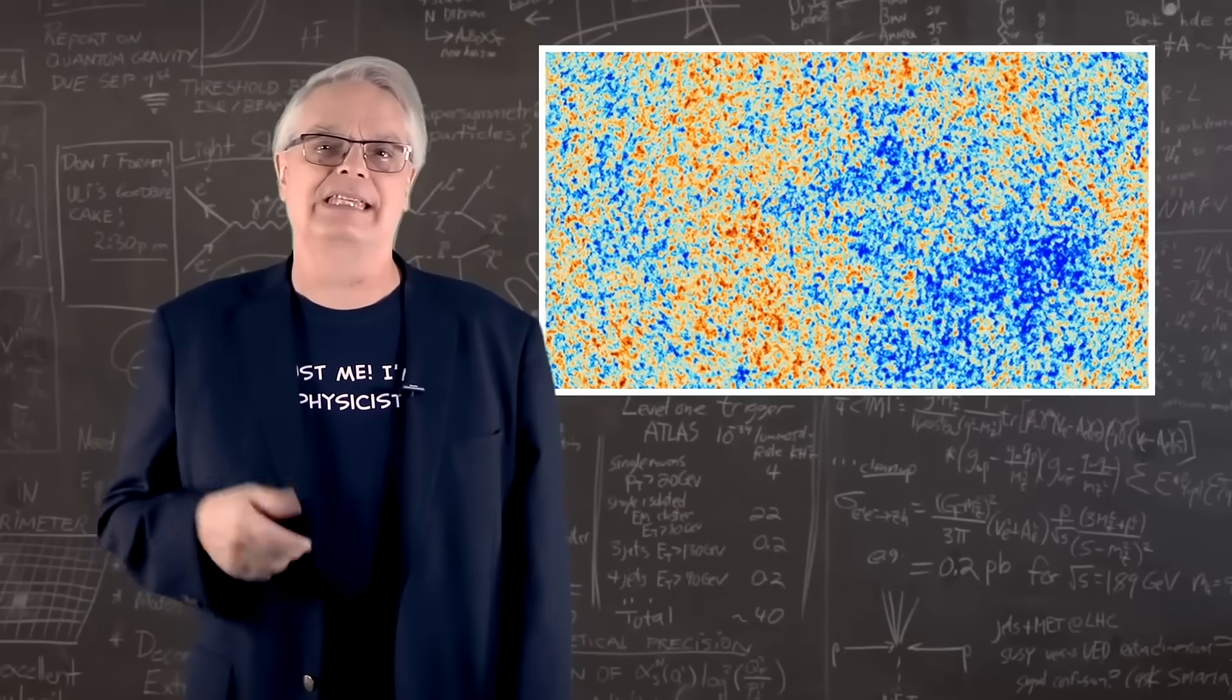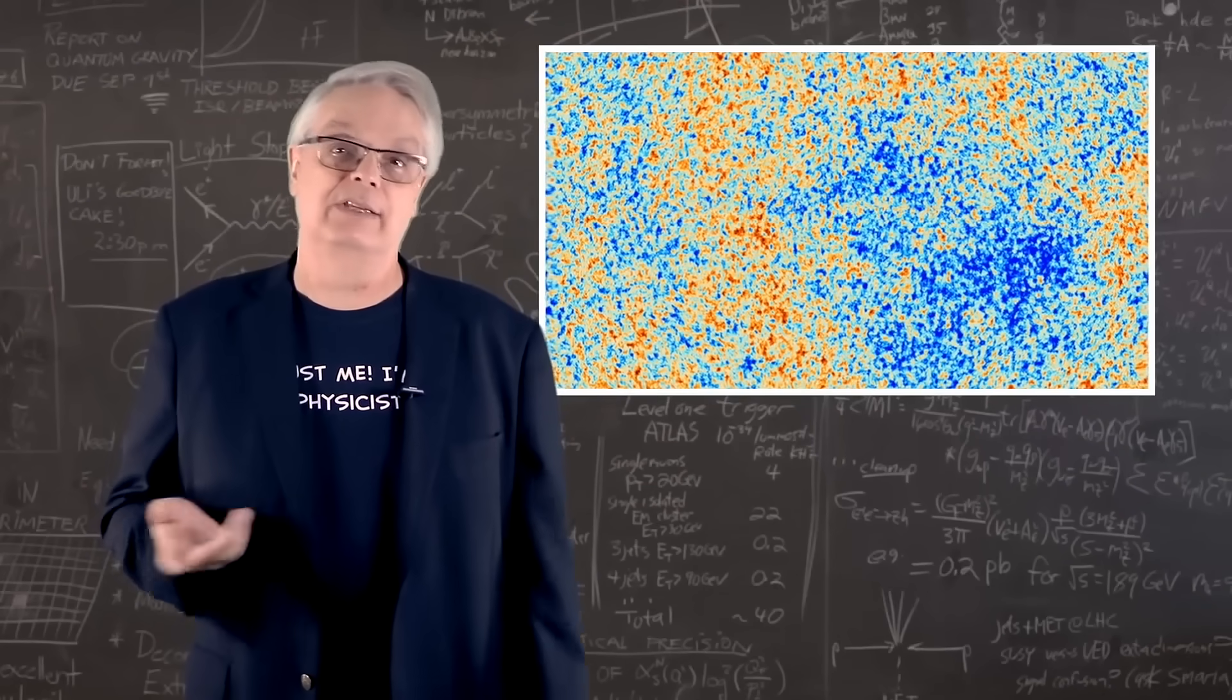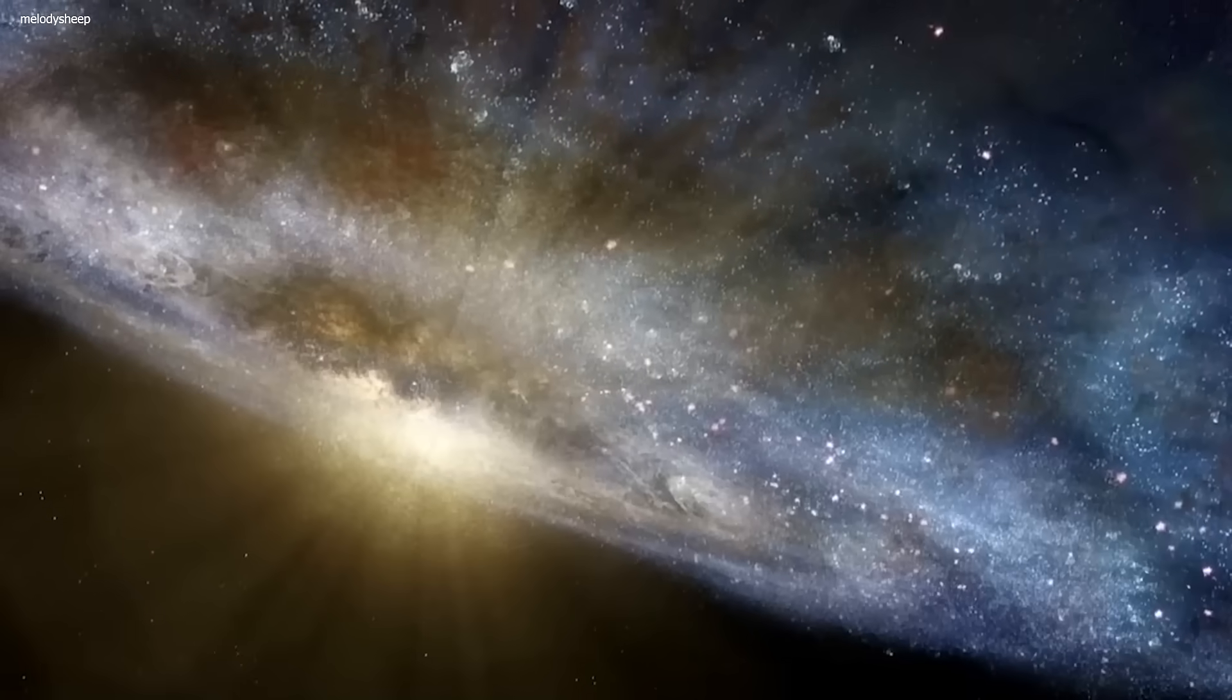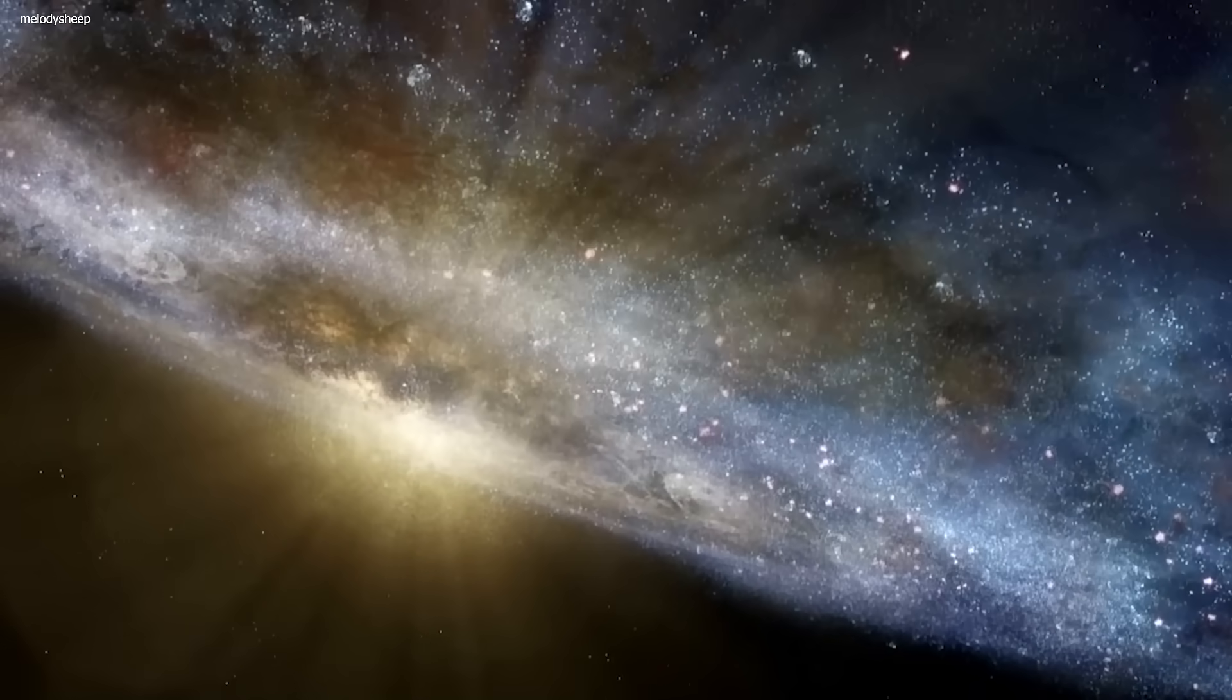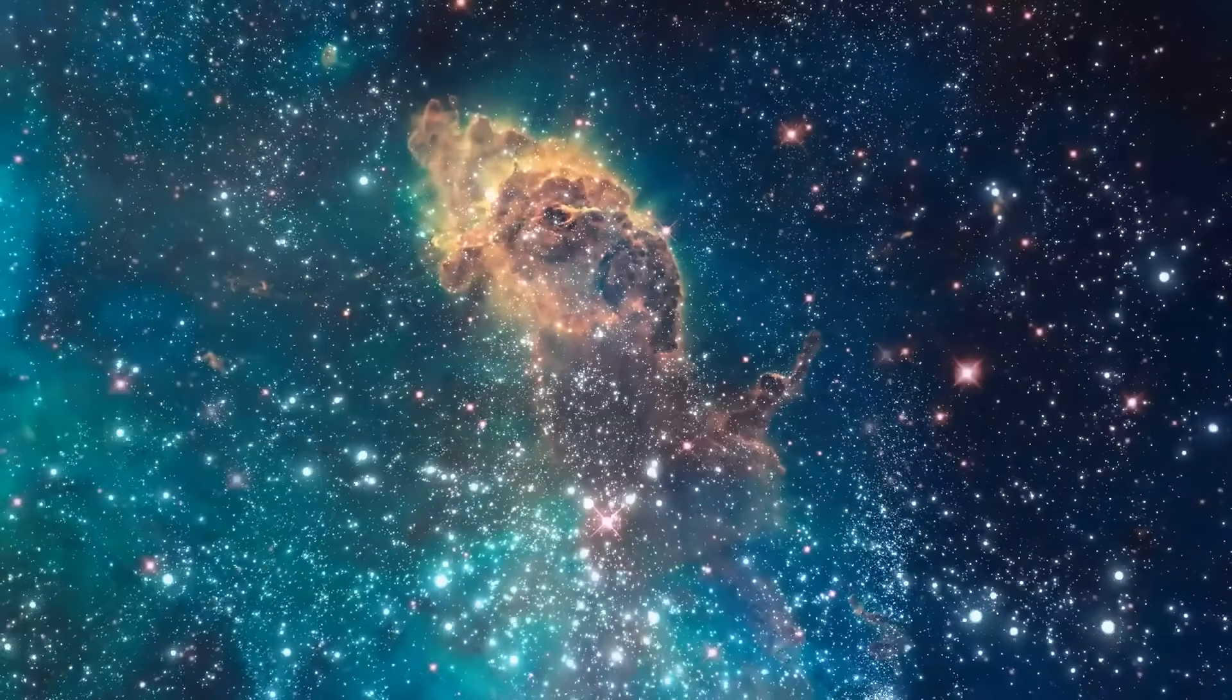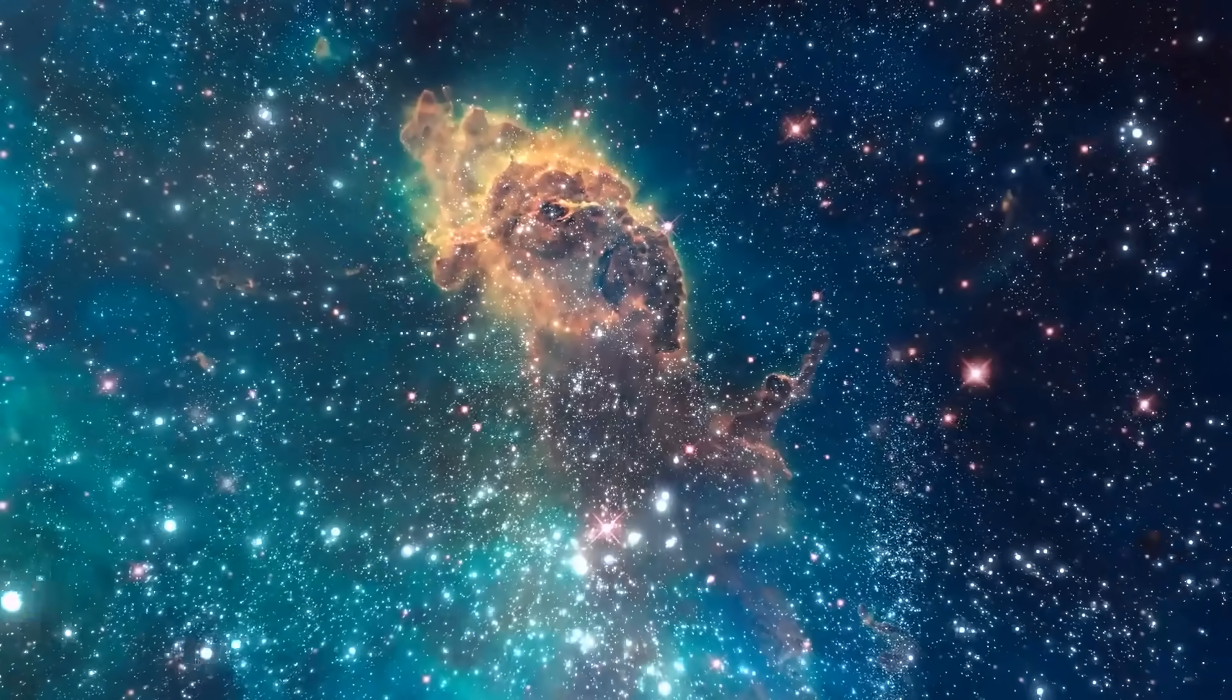So what exactly is the CMB and where does it come from? The CMB is the afterglow of the Big Bang, which is the event that gave birth to our universe approximately 14 billion years ago. The Big Bang was a massive explosion that created everything in the universe, including time and space.